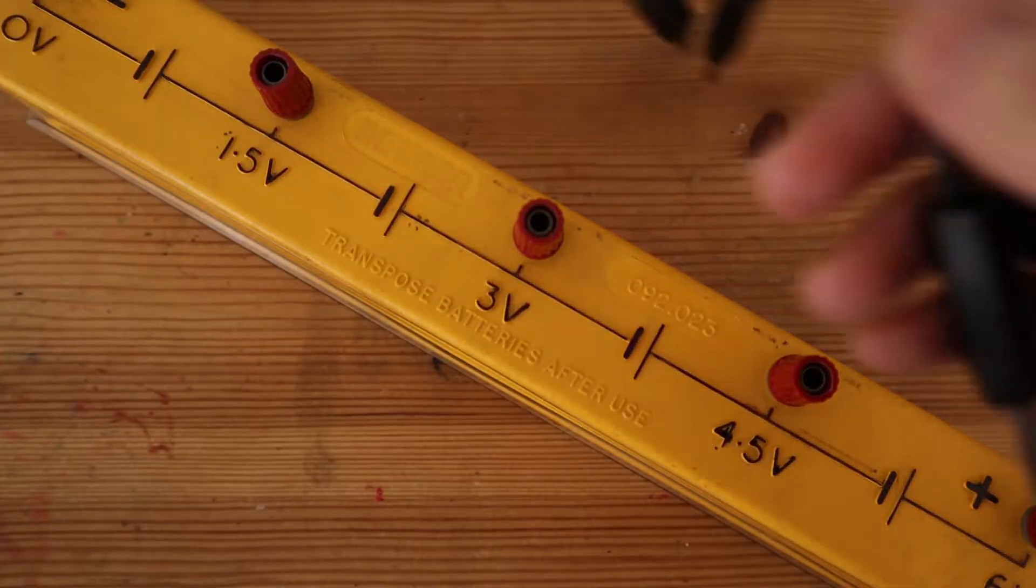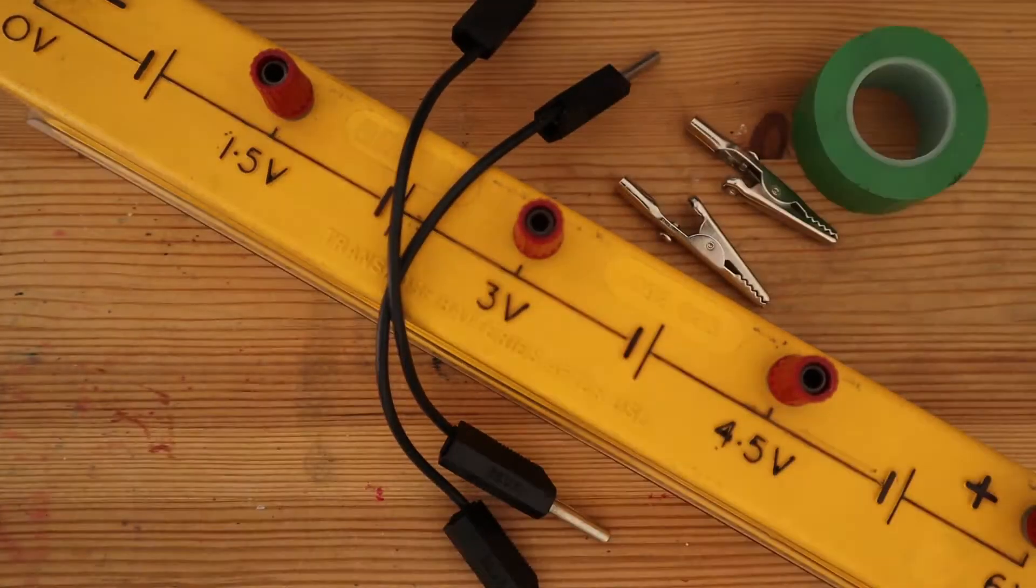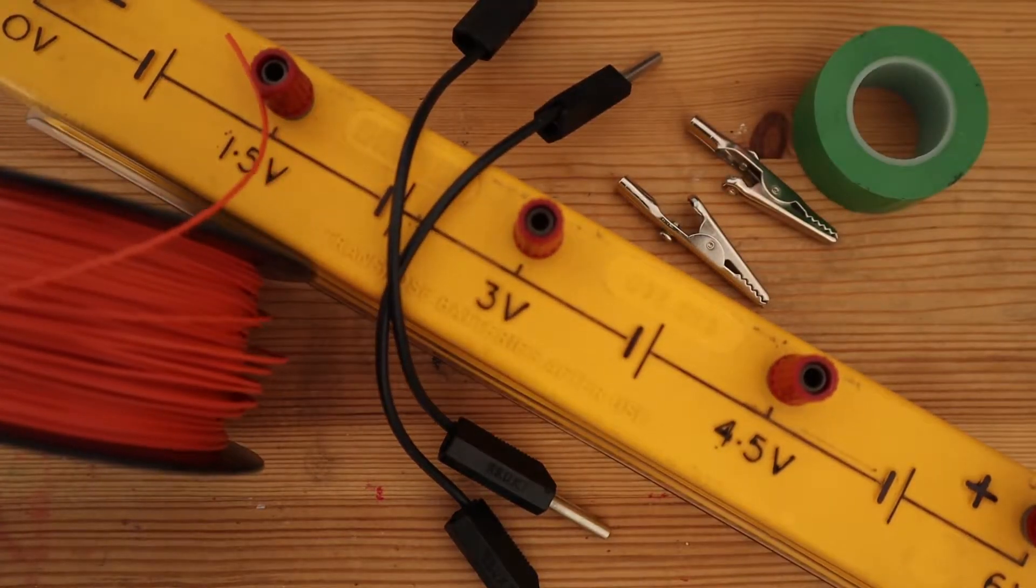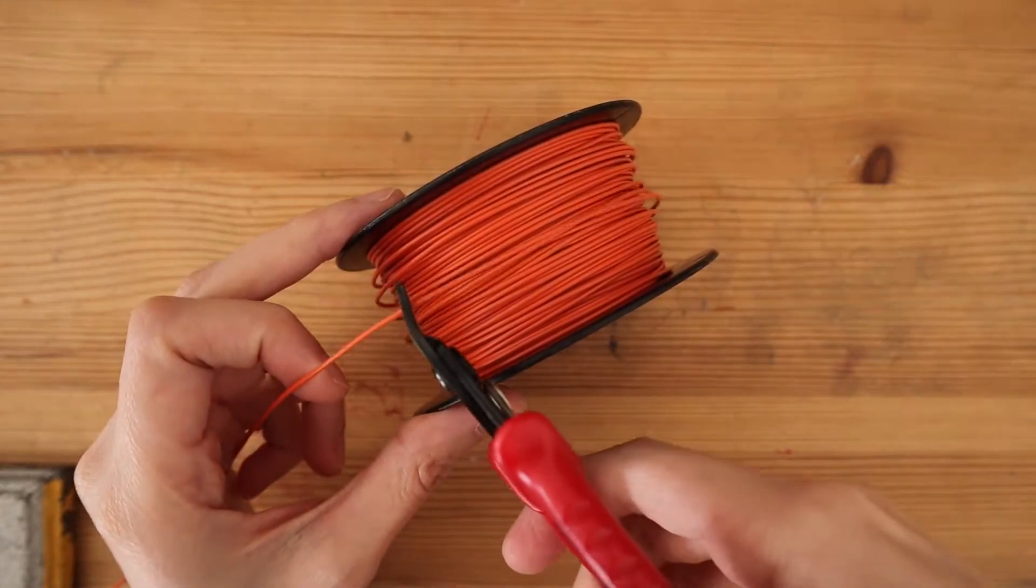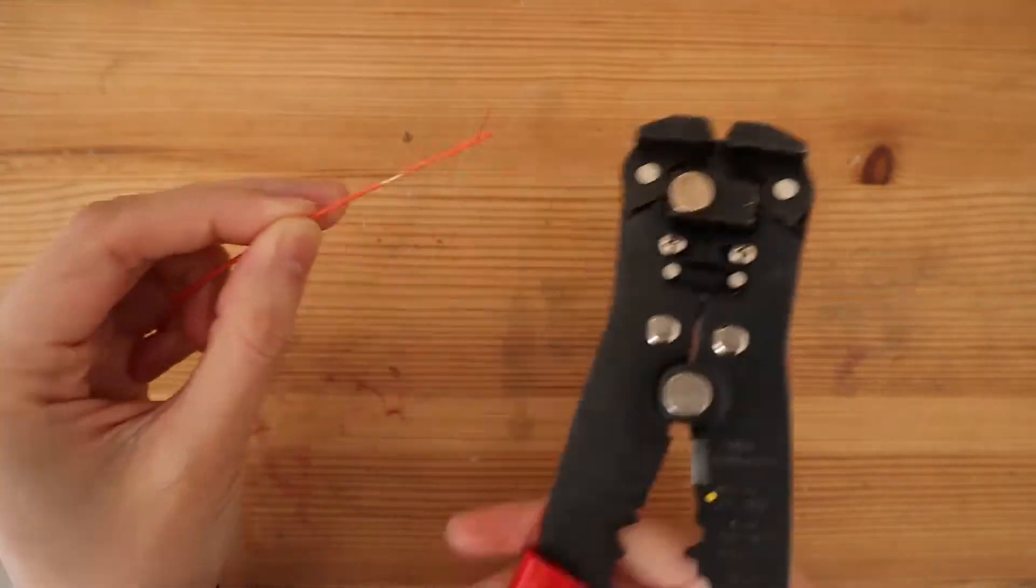You'll need a power source, a couple leads with alligator clips, electrical tape, and a wheel of insulated wire. Cut around one meter off the wire and strip one of the two ends.